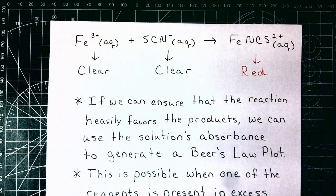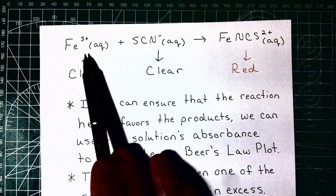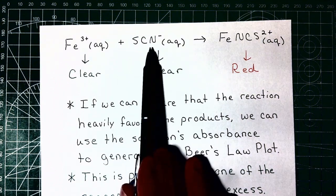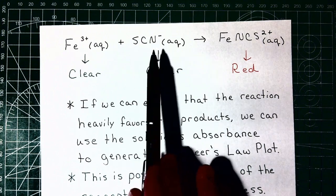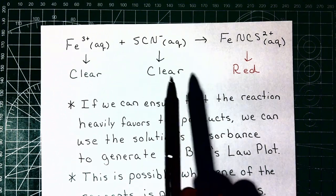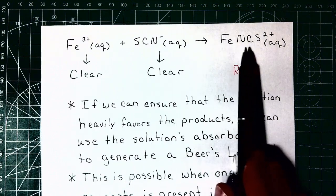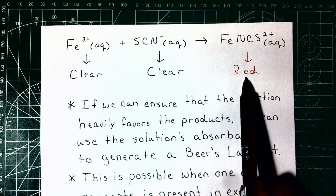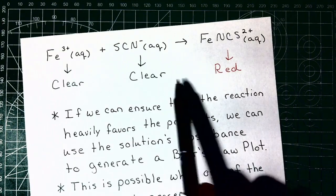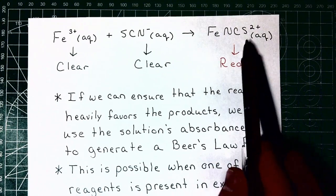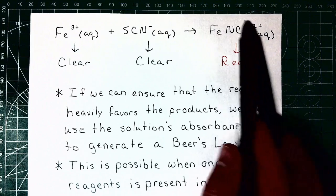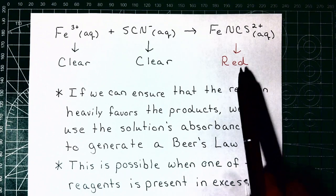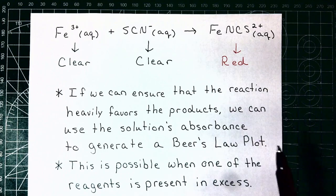In order to know what that is, we need to think about what is really happening here. We have a solution of iron nitrate, which is a source of Fe³⁺ ions — that's clear. We also have a solution of sodium thiocyanate containing thiocyanate ions — also clear. However, when these two combine they form ferrothiocyanide ion, which has a red color. We can use this color to distinguish and determine the concentration of ferrothiocyanide in solution.